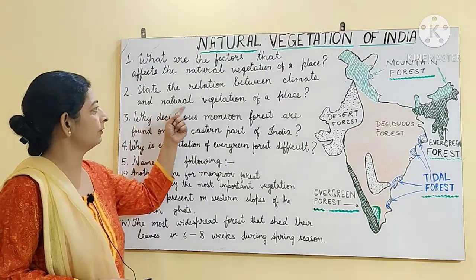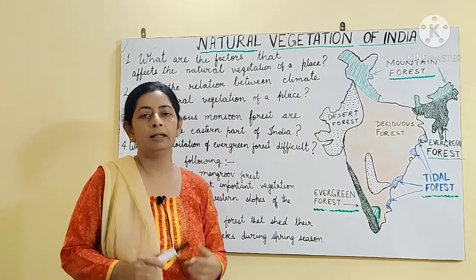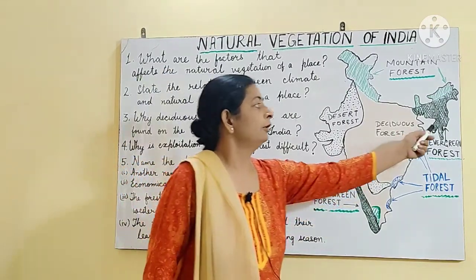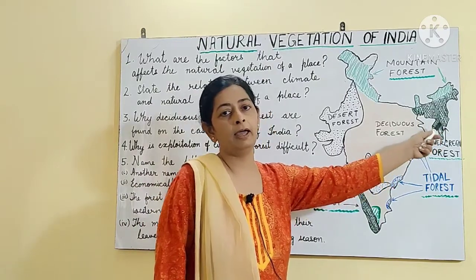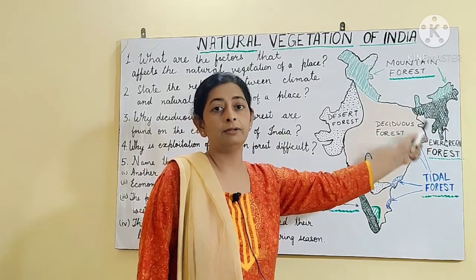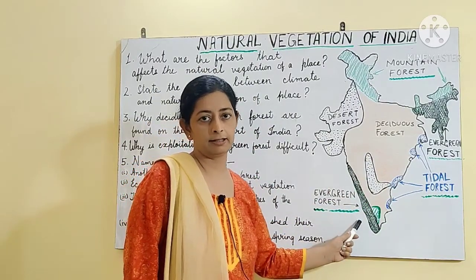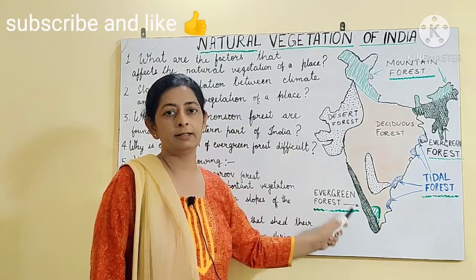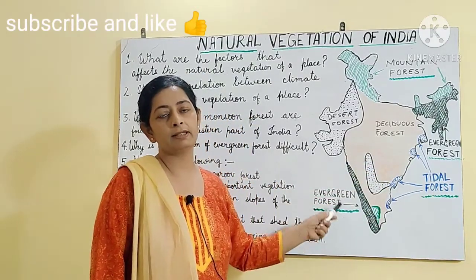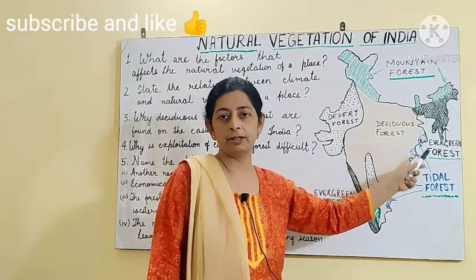The second question is: state the relation between climate and the natural vegetation of a place. The climate and the natural vegetation of a place are very closely related to each other. For example, the northeastern part of India has an average temperature of 25 to 28 degrees centigrade and very high rainfall. Similar conditions exist on the western slopes of the Western Ghats. So in these regions where there is heavy rainfall, evergreen forests exist.